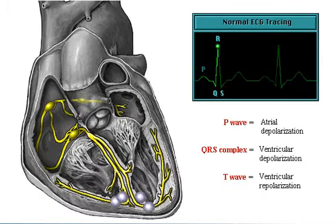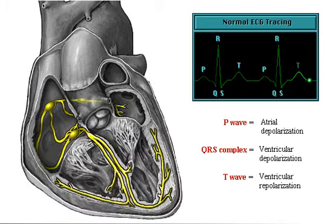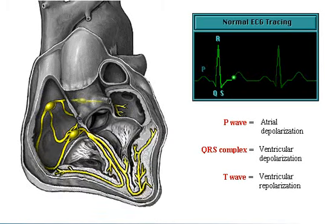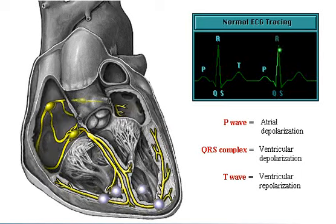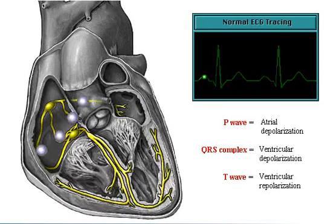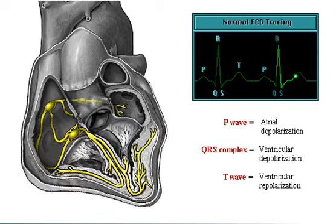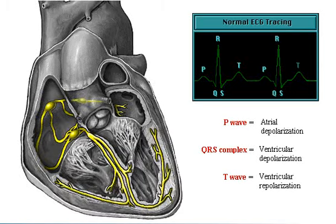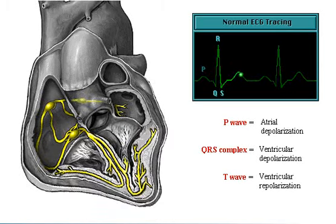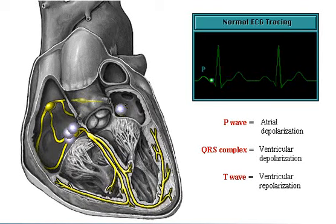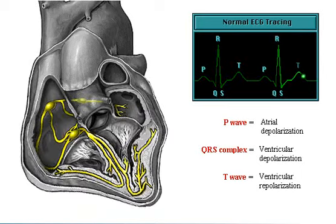These diagrams show the correlation between heart electrical activity and an ECG wave tracing. The P wave represents atrial depolarization, which is followed by atrial contraction. The QRS complex represents ventricular depolarization, which is followed by ventricular contraction. And the T wave represents ventricular repolarization, which is followed by ventricular relaxation.